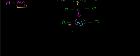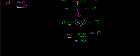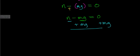Simplifying: the normal force minus mg equals zero. To find the normal force, add mg to both sides. What you should see is that the normal force equals mg, which equals the weight force. So in this particular case, the weight force equals the normal force.